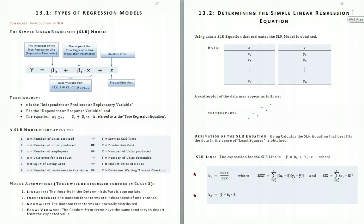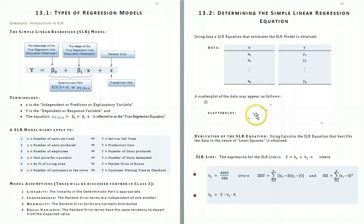Section 1 was the theoretical side of Simple Linear Regression. Section 2 is the sample side. We'll assume we have linked data, so we have N data points. X1 might be the number of units serviced on the first service call and Y1 might be the time of the first service call, for N service calls. A scatterplot of the data might look like this, where we clearly see the deterministic part of the model might be appropriate.